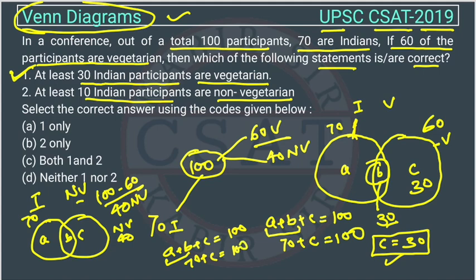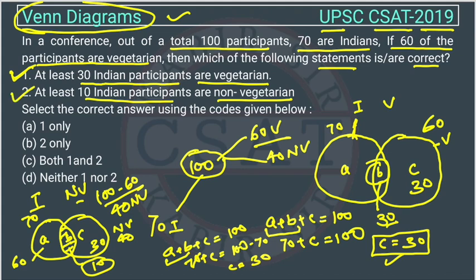So c equals 30, and therefore b equals 40 minus 30, which is 10. And a equals 60. This b represents the common part — the number of persons who are both Indian and non-vegetarian — which is 10. So statement B, 'at least 10 Indian participants are non-vegetarian,' is also correct. Therefore the answer is C: both A and B are correct.